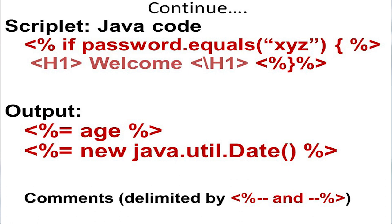The second scripting element is scriptlet — the processing statements written inside <% ... %>. For example: <% if (password.equals("xyz")) { %> <h1>Welcome</h1> <% } %>. When the condition is true, the heading will be displayed; otherwise it won't. The processing statements are encapsulated inside the percentage signs.